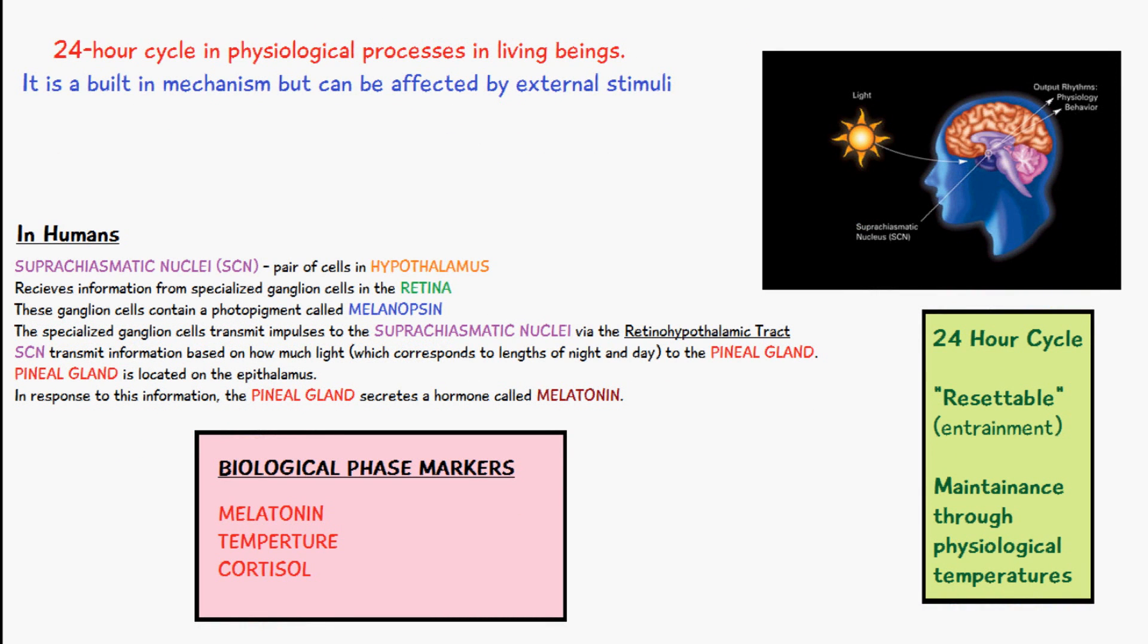Some key factors for it to be called a circadian rhythm: it must be a 24-hour cycle, it must be resettable (this is known as entrainment, where it's able to reset based on reinforcement of external stimuli), and it must be able to be maintained through varying physiological temperatures.